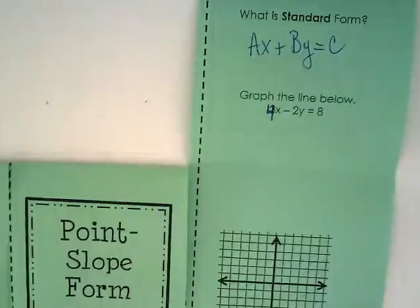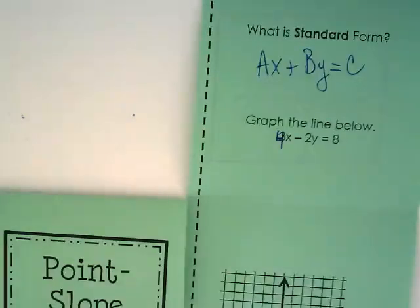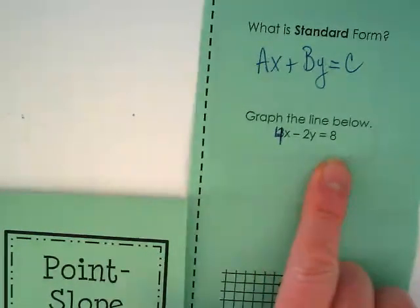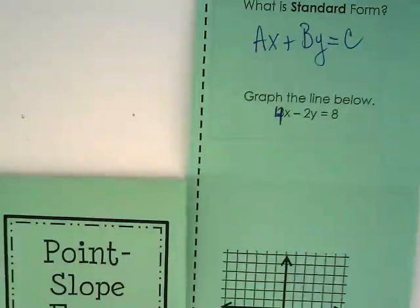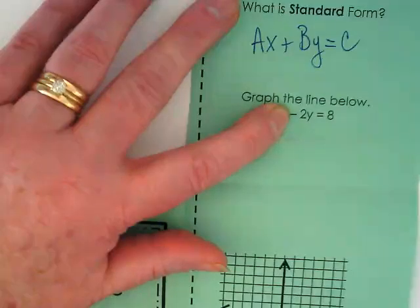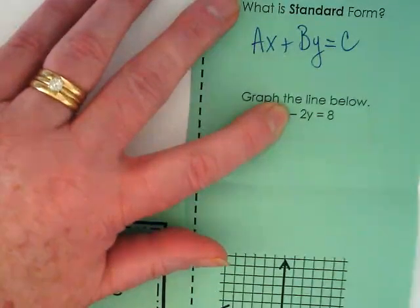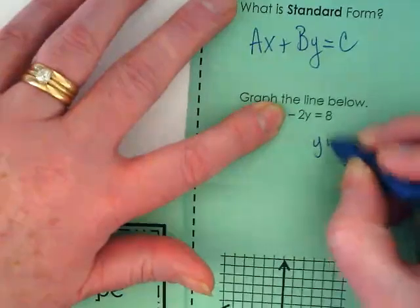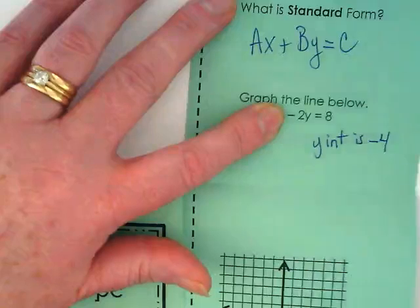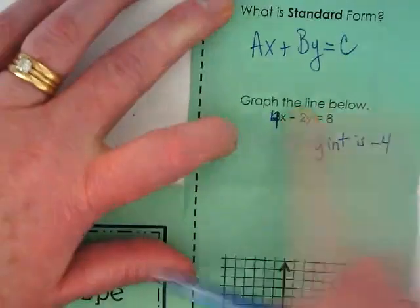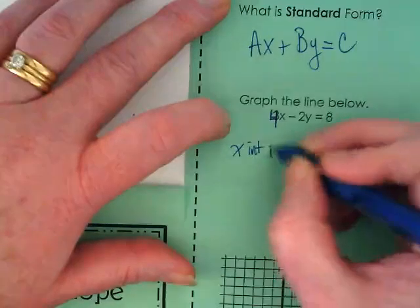When we have equations that are in standard form, you can plug a zero in for the x. What would four times zero be? Zero. That leaves us with negative 2y equals 8. I like to take an even shorter cut. If I'm going to plug in a zero, I can just cover this up. I get negative 2y equals 8. What would I do next? Divide by negative two. So my y-intercept is negative four. If I cover up the y, I'm going to get the x. I've got 4x equals 8. That means my x-intercept is 2.